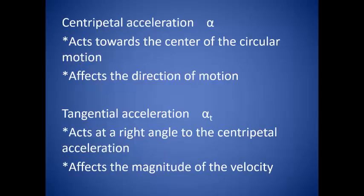So just as a review, centripetal acceleration acts towards the center of the circle. It is what keeps the object in a circular motion. For example, if you have a ball and a string, the string is the force that is causing the centripetal acceleration. This is going to affect the direction of the motion. Tangential acceleration acts at a right angle to the centripetal acceleration. It affects the speed of the object. We designated tangential acceleration as alpha sub t. Notice that centripetal acceleration is simply alpha.